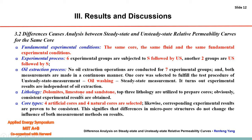Regarding the oil extraction process: no oil extraction operations were conducted for seven experimental groups, but one core was selected to fulfill the test procedure of unsteady-state measurements, oil washing, and steady-state measurements. So the oil extraction process was eliminated as a main cause. We also used different lithologies and core types — four artificial cores and four natural cores were selected. So what is the main cause of the difference?